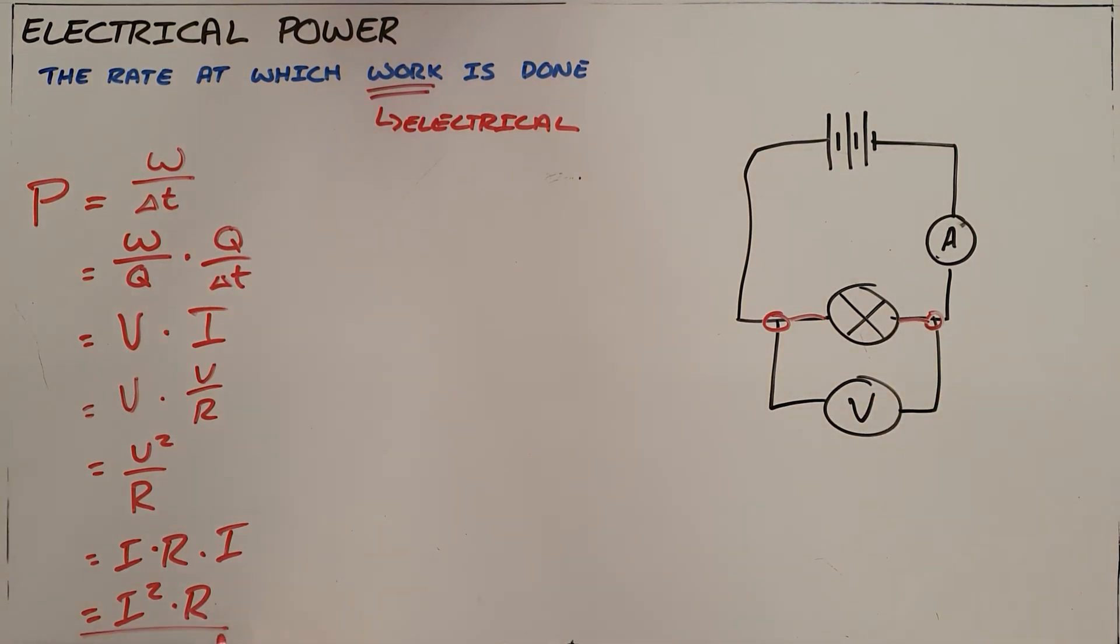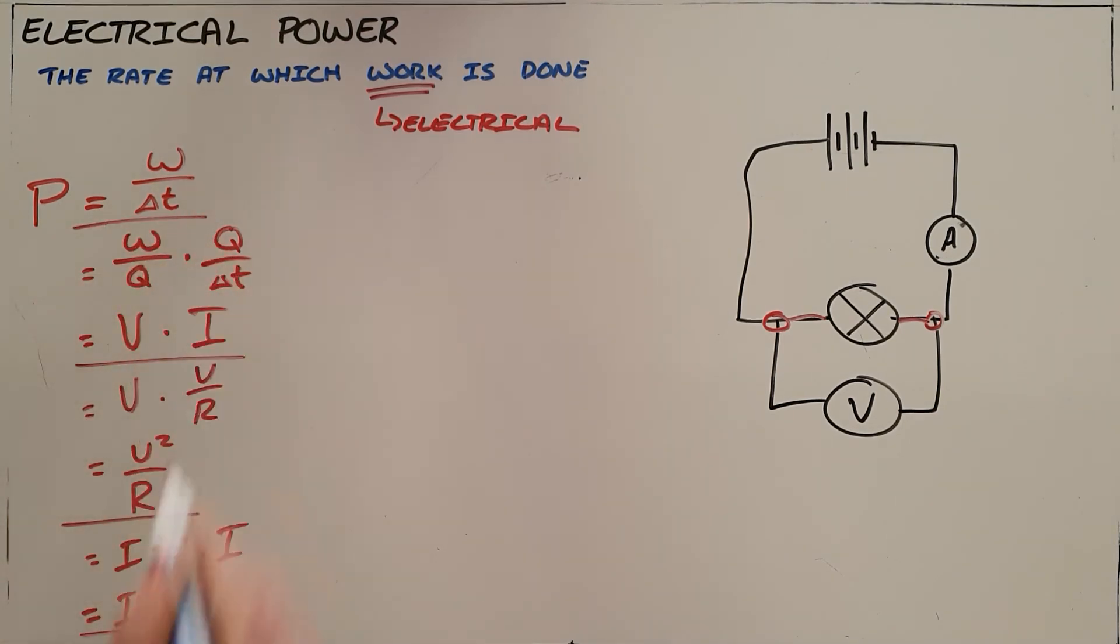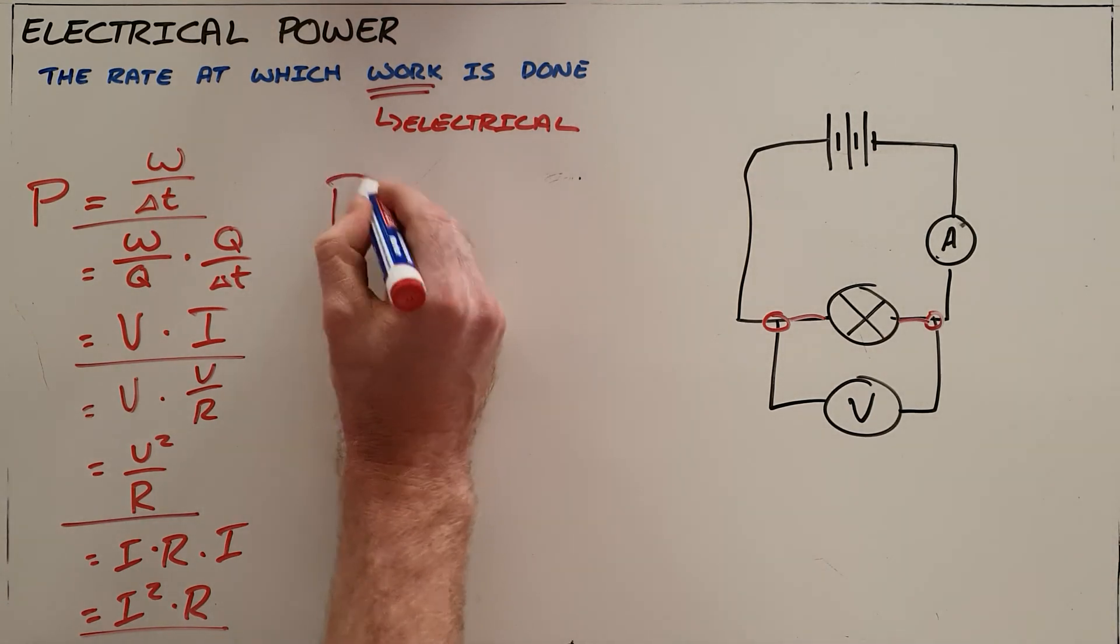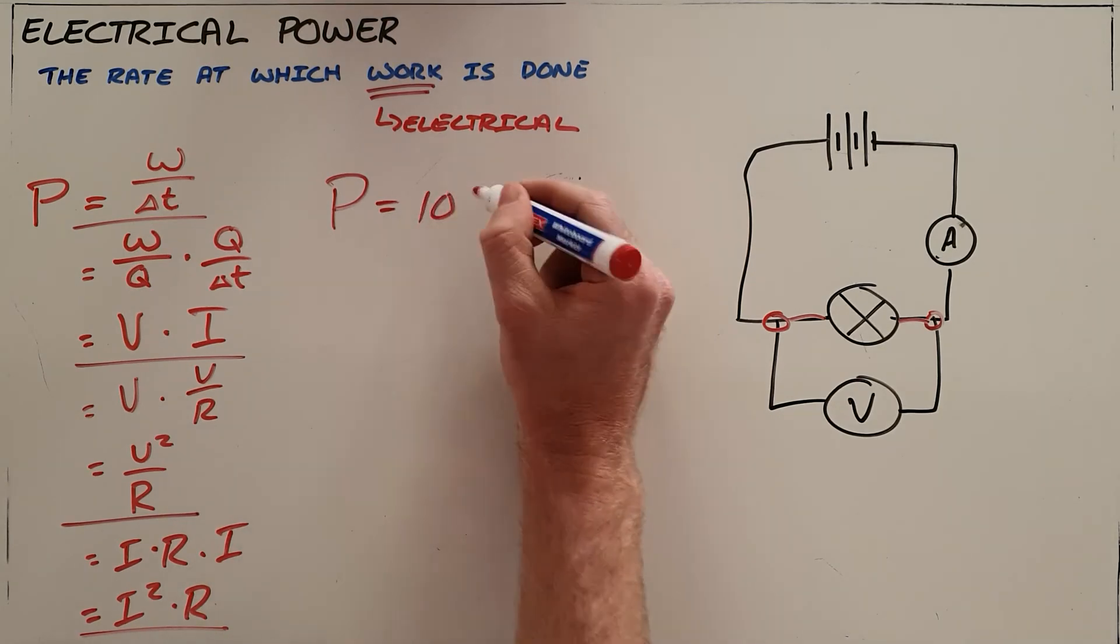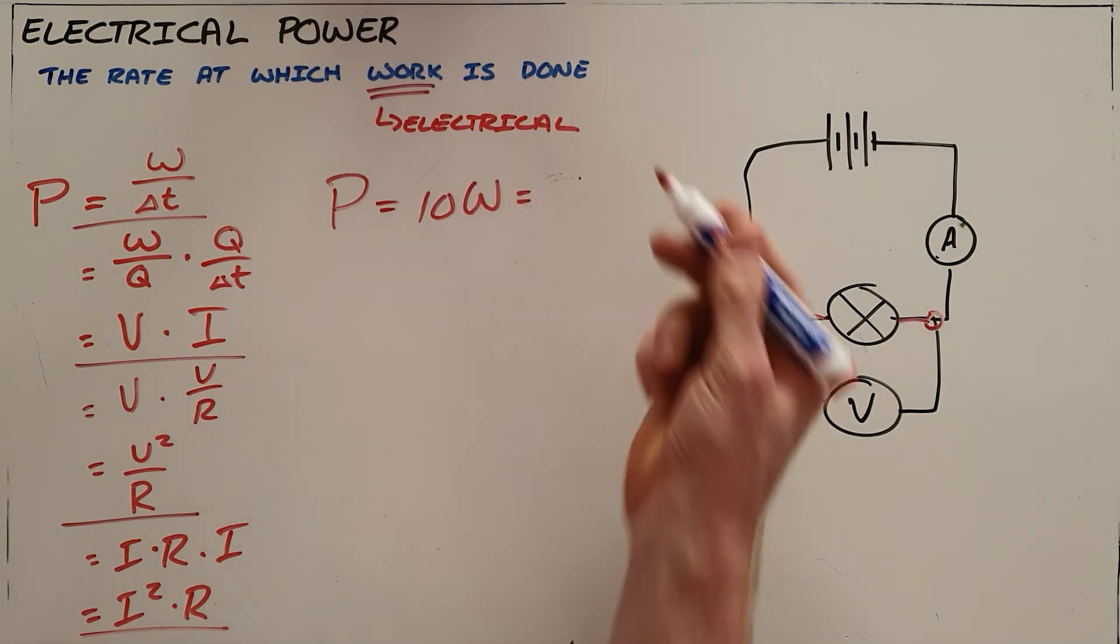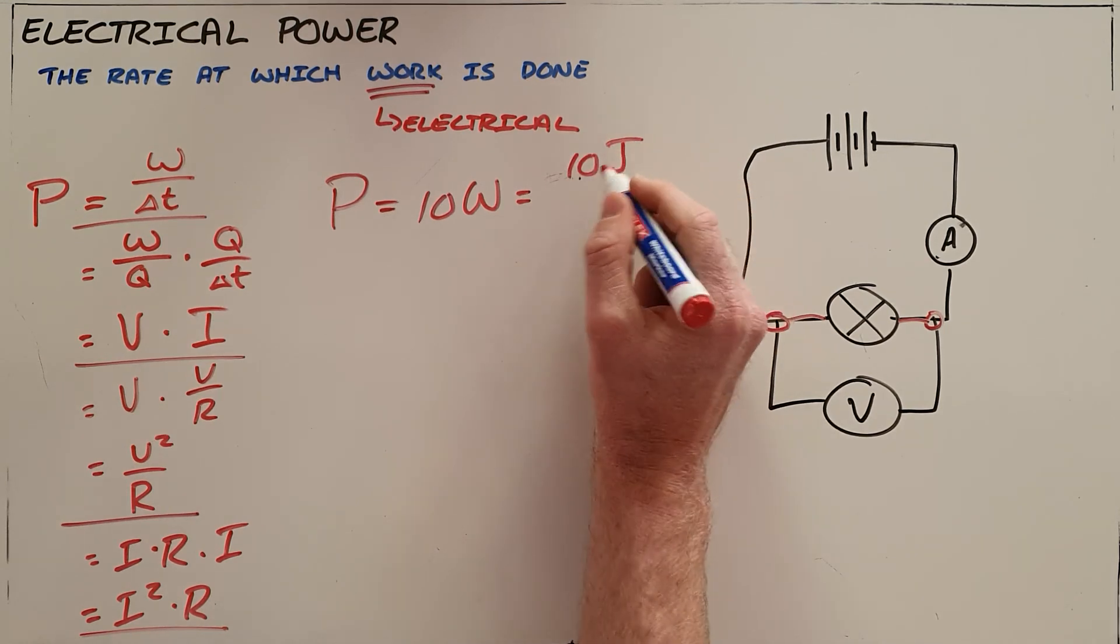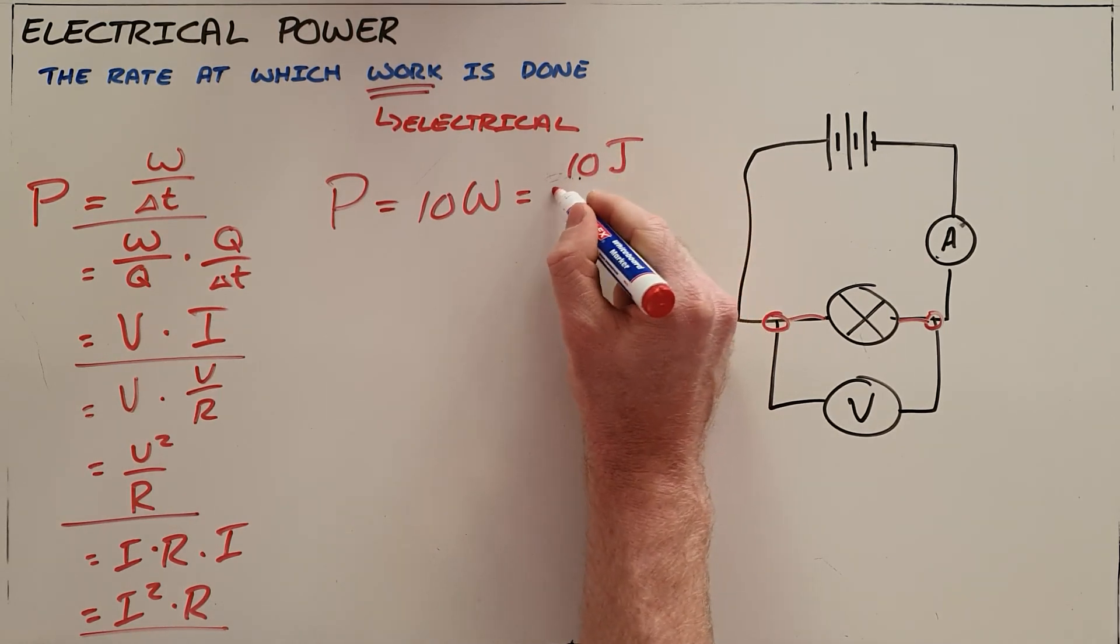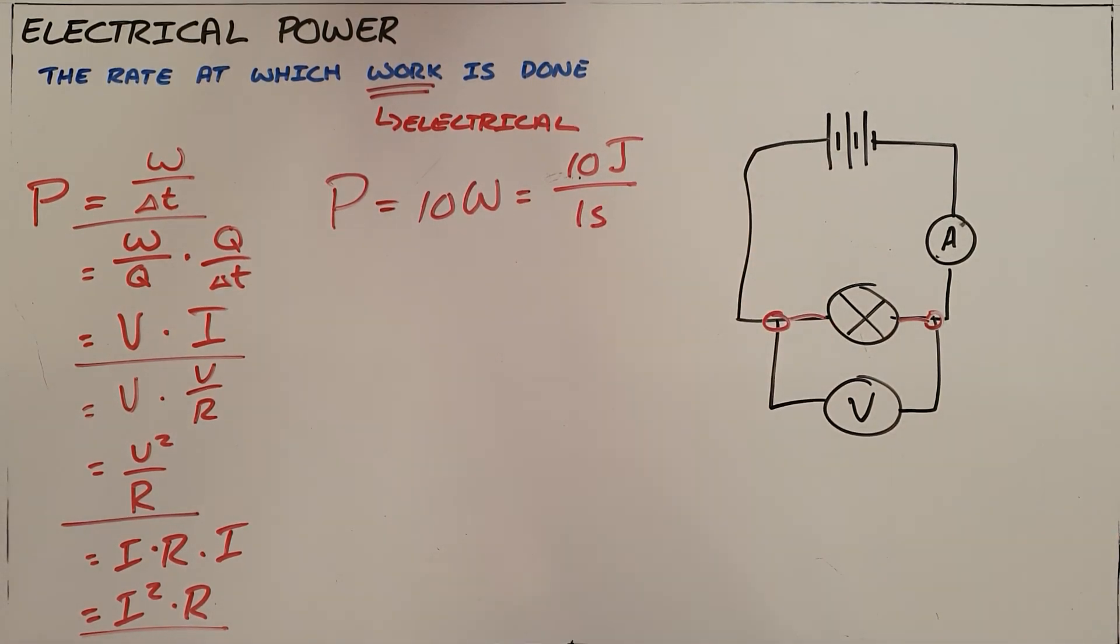So we have three or essentially four formulae that we can use to determine the power consumption of a device. We know that power is measured in watts. When we say that the power of a light bulb is 10 watts, what we are actually saying is that that light bulb is consuming or using or converting 10 joules of energy per second into another form of energy.